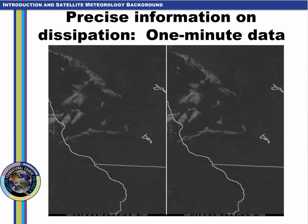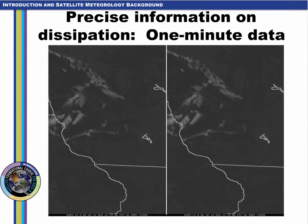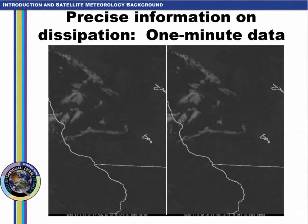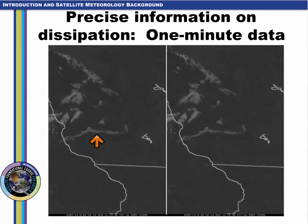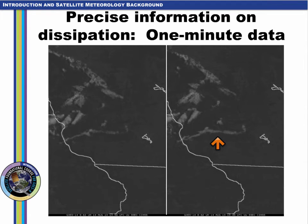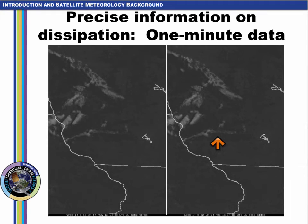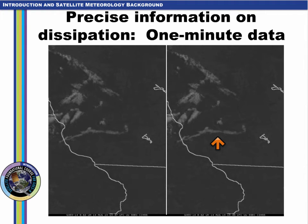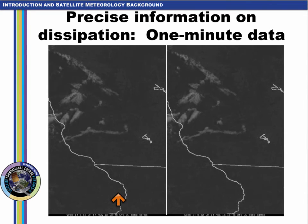GOES-R will allow for one minute data. This is a handy utility to have when precise information on fog dissipation time is required. The 15 minute time step that is standard in the pre-GOES-R era is insufficient to determine with precision when fog will dissipate, as shown in this example over the lower Wisconsin River. One minute data is on the left, 15 minute data is on the right.